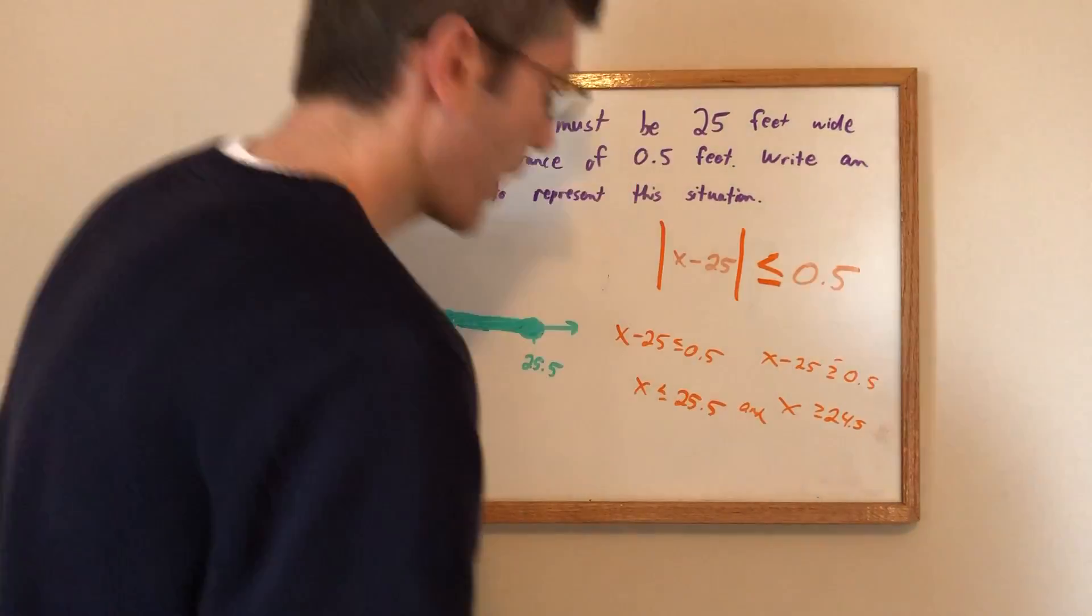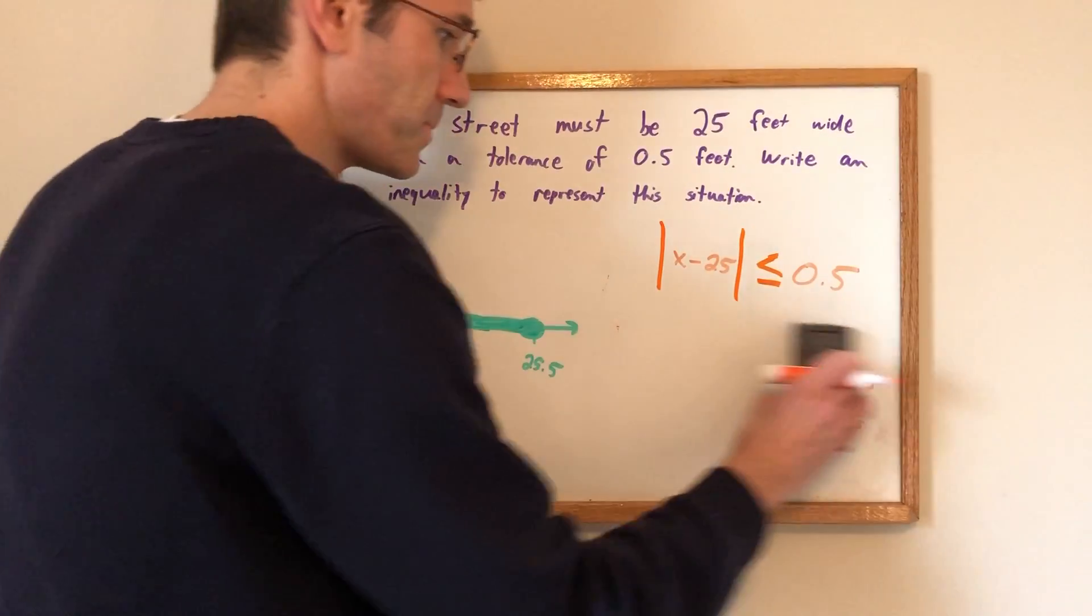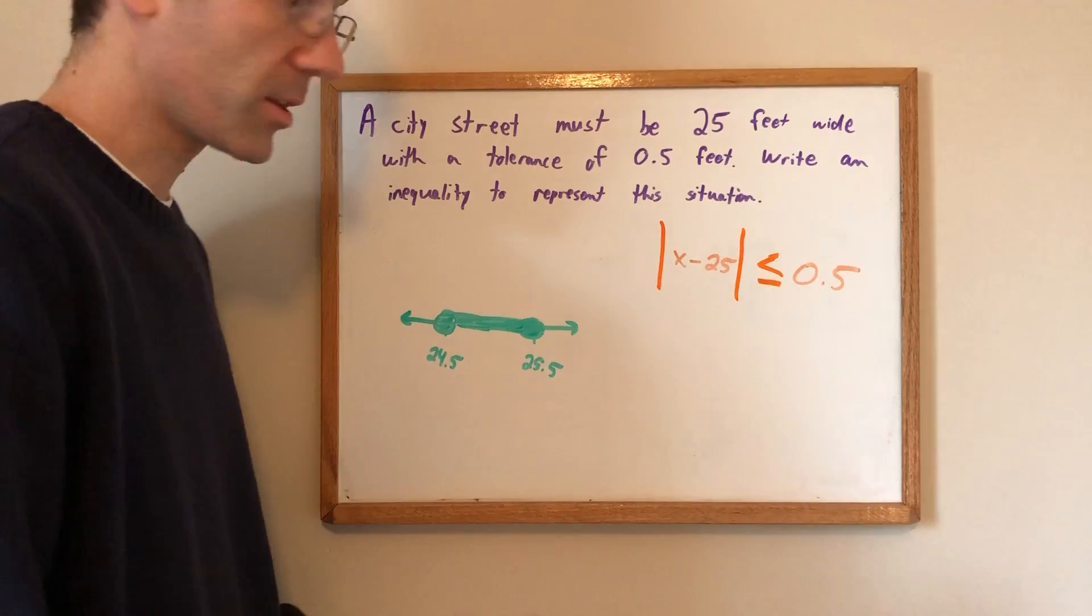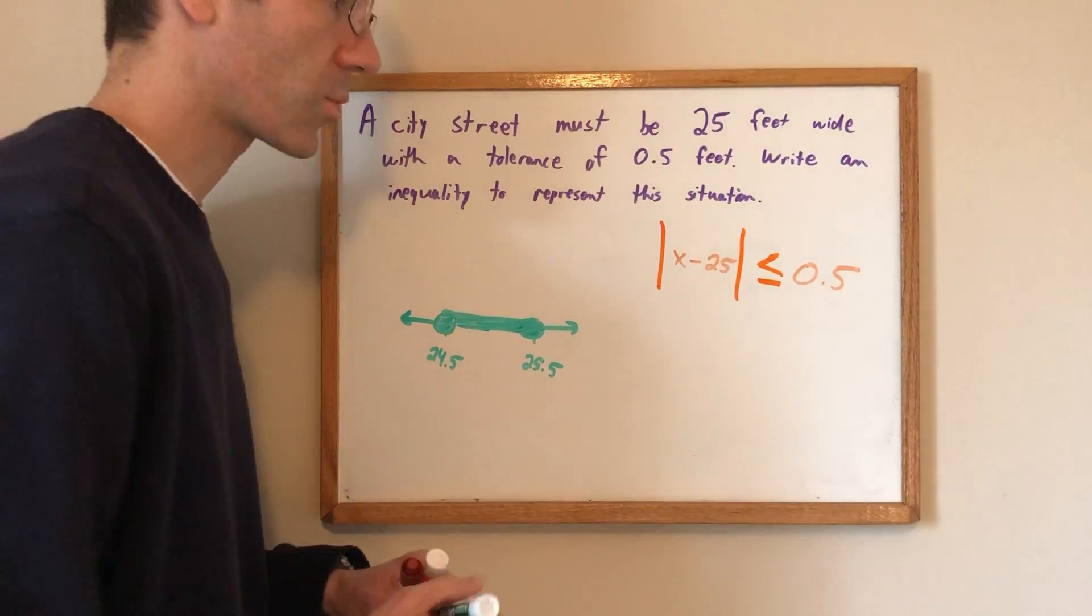And so we have the correct answer. So this is right. And I dropped the eraser. How embarrassing. This is correct. And let me take this opportunity to label a few things and then we'll do the next word problem.